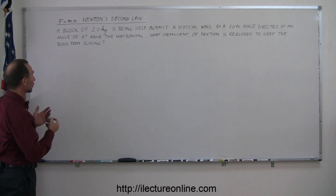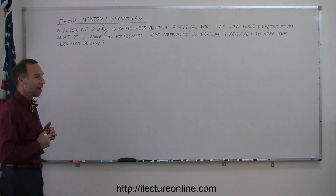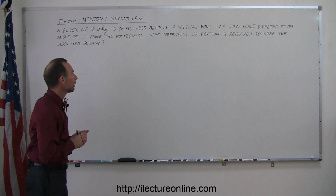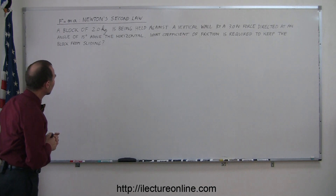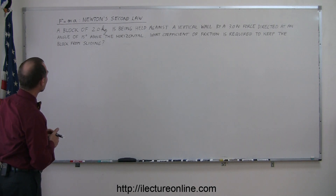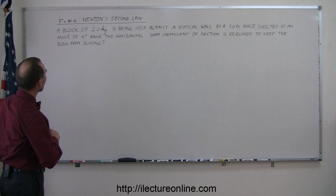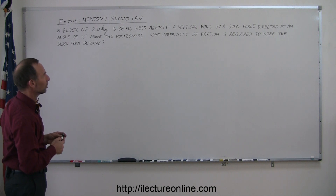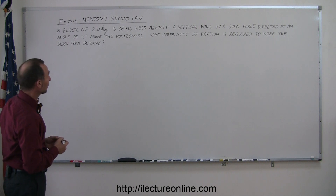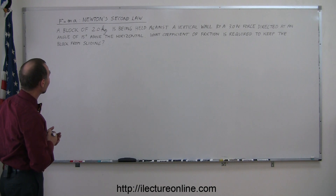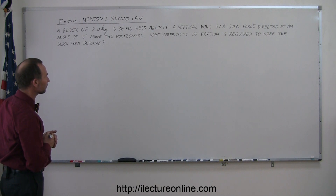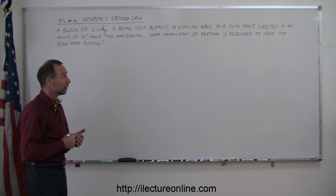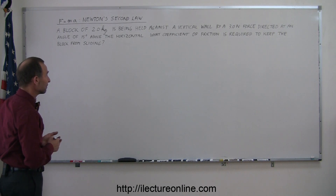Here's another example of how to work with Newton's second law, and here's a slightly different type of problem. A block of two kilograms is being held against a vertical wall by a three Newton force directed at an angle of 15 degrees above the horizontal. What coefficient of friction is required to keep the block from sliding?